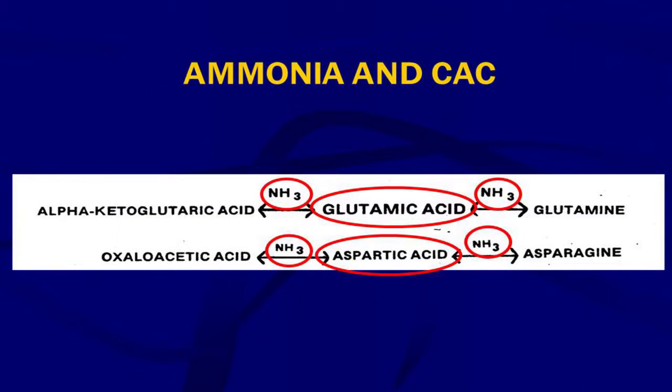Alpha-ketoglutaric acid, which comes from the Krebs cycle, under the influence of ammonia becomes glutamic acid, and then under the influence of ammonia becomes glutamine. Oxaloacetic acid from the Krebs cycle, under the influence of ammonia, becomes aspartic acid, and then with another ammonia attached becomes asparagine.